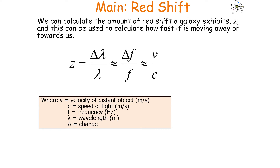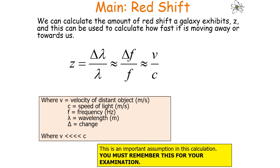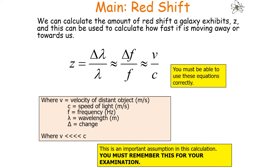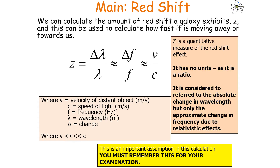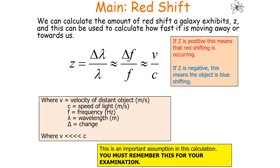We can calculate the amount of redshift a galaxy exhibits, z, using the equation: z = Δλ/λ = Δf/f = v/c, where v is the speed of the object and c is the speed of light. This only works when v is much less than c. You are given these equations in your examination, but you must be able to use and equate them correctly. z is a quantitative, unitless ratio — it represents the absolute change in wavelength but only the approximate change in frequency due to relativistic effects. If z is positive, redshift is occurring; if z is negative, the object is blueshifting.